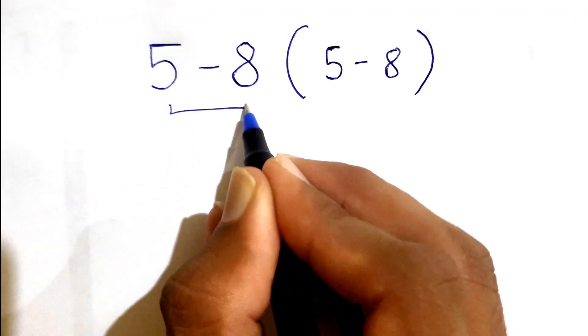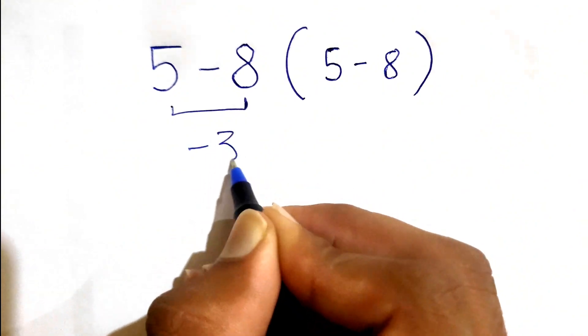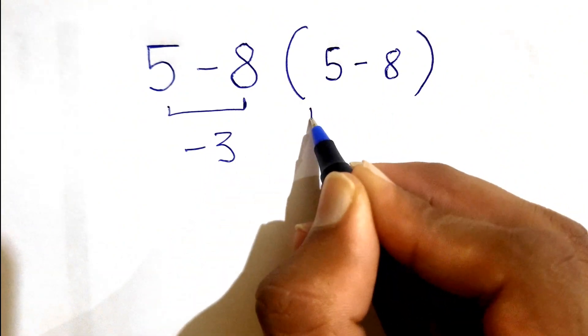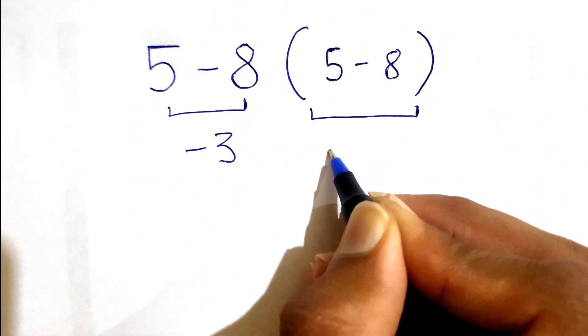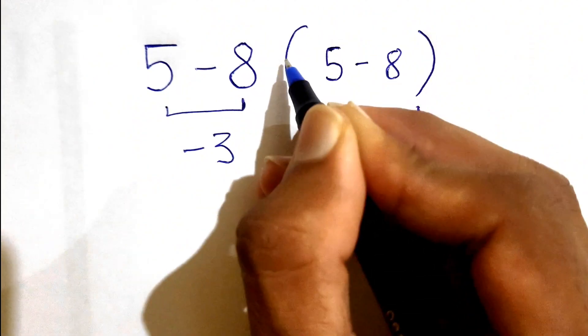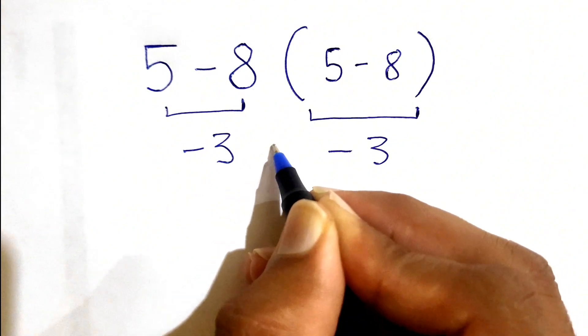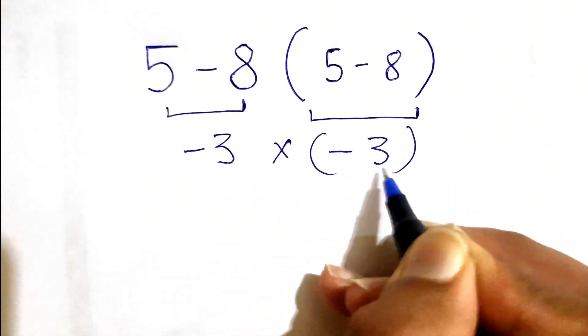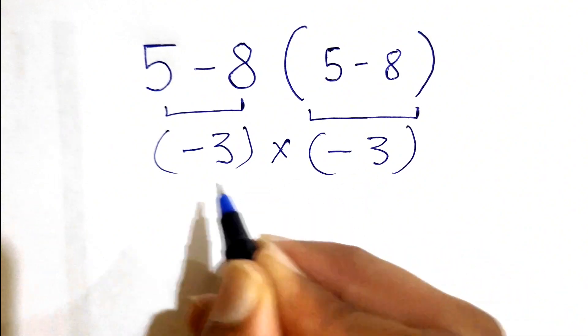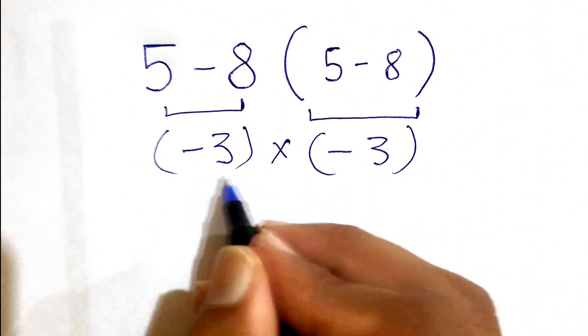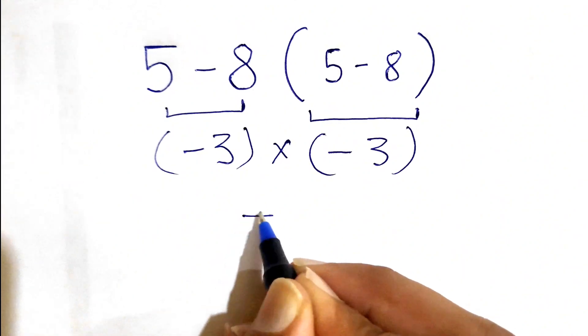5 minus 8 gives us negative 3, and again, this 5 minus 8 also gives us negative 3. Now there is multiplication, so negative 3 times negative 3 gives us the answer as positive 9.